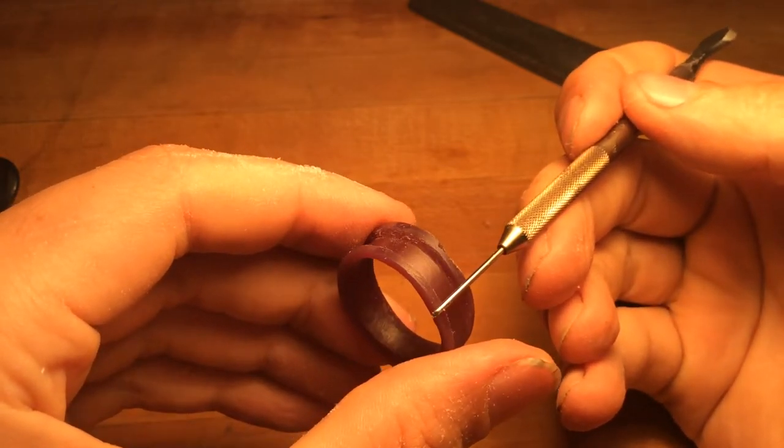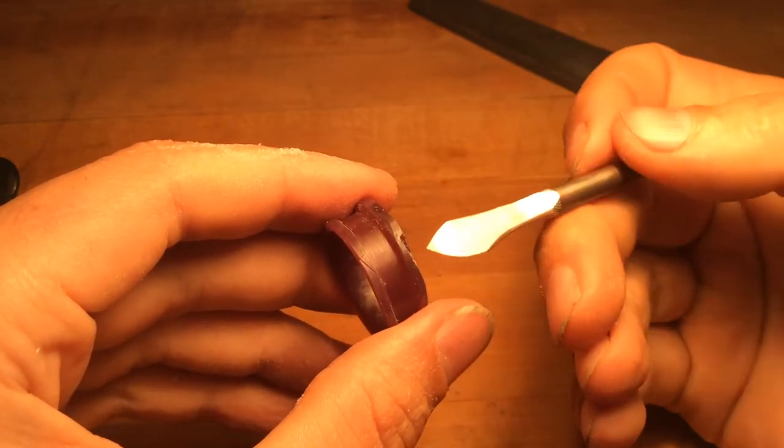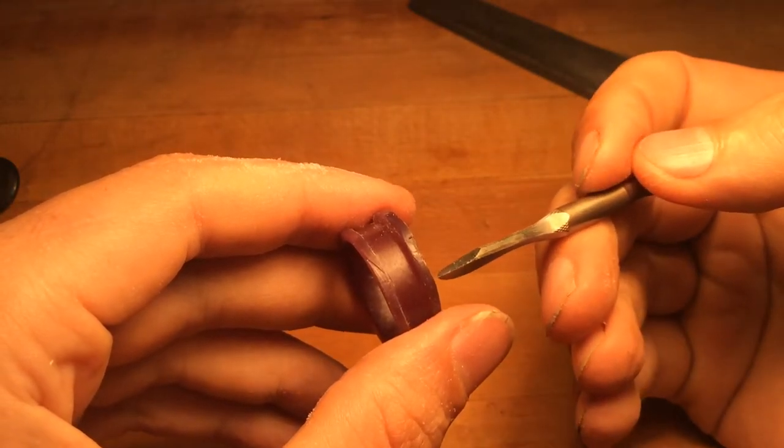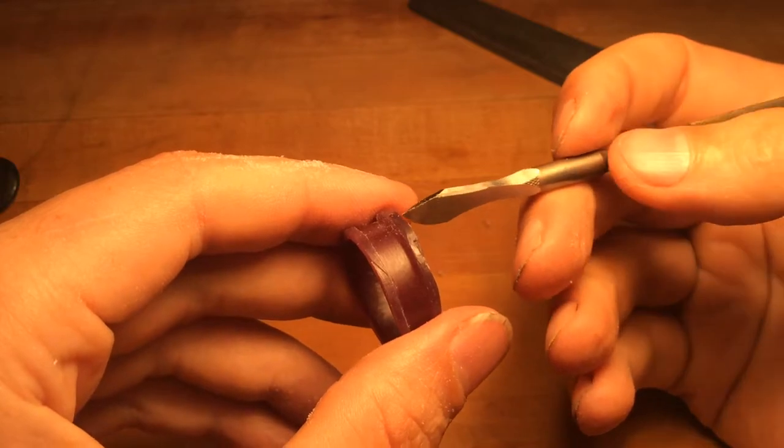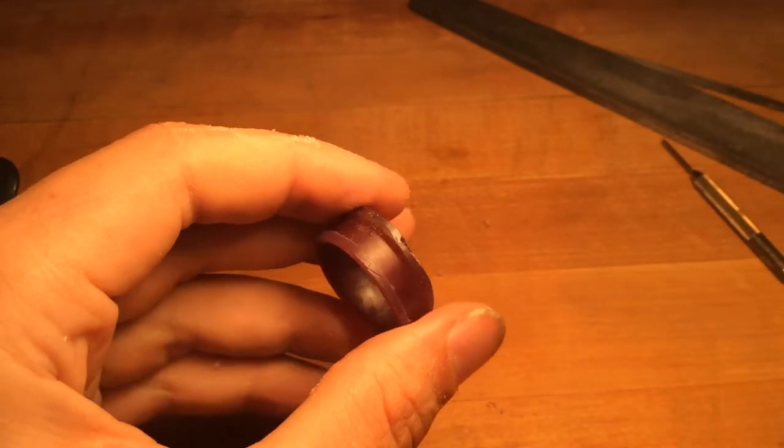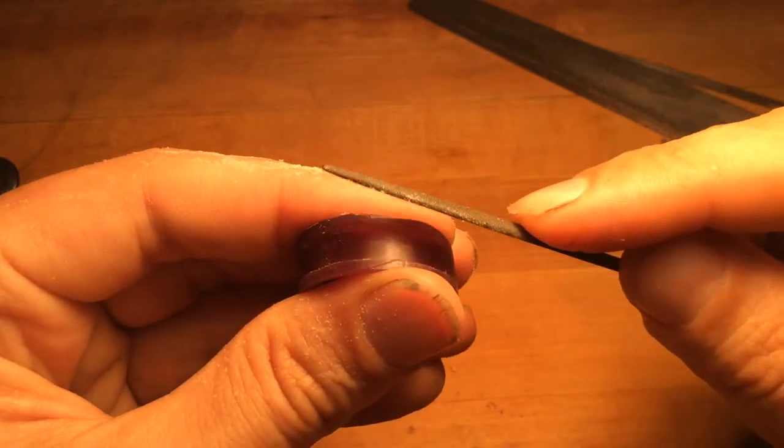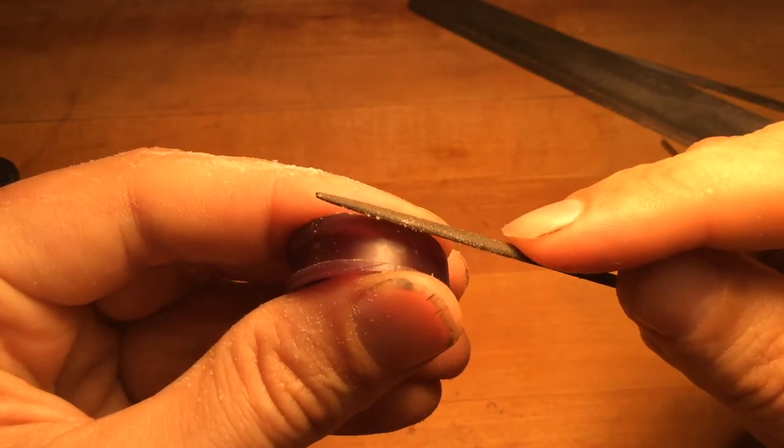You're going to need to take the outer surface down. As you scrape the tool across, it's just going to emphasize a divot there. That's when going back to your half round file and doing a light chamfer to smooth out that detail is a good idea.